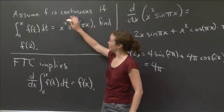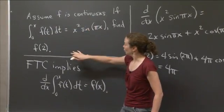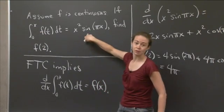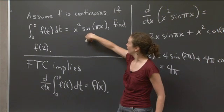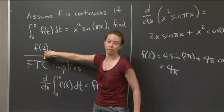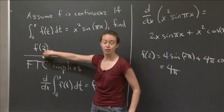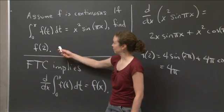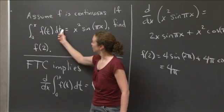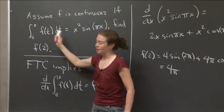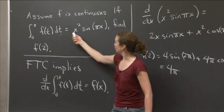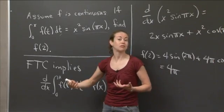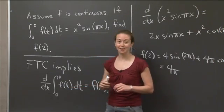We started with a function that we knew was continuous. We knew the integral from 0 to x of that function was equal to a certain function of x. And we wanted to evaluate this function at a certain point. So what we exploited was the fundamental theorem of calculus. And the fundamental theorem of calculus tells us that d/dx of the left-hand side is f of x. And so we can take d/dx of the right-hand side and figure out what f of x is. And then we just evaluate.